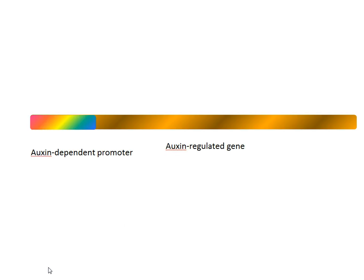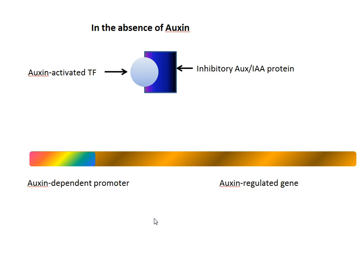Usually in an auxin-regulated gene system, we have an auxin-dependent promoter, which is in front of the auxin-regulated gene. In the absence of auxin, an auxin-activated transcription factor binds to what is called an inhibitory auxin IAA protein. And because this transcription factor binds very tightly to this inhibitor, the transcription factor cannot interact with the promoter and thus stimulate the transcription of the gene.